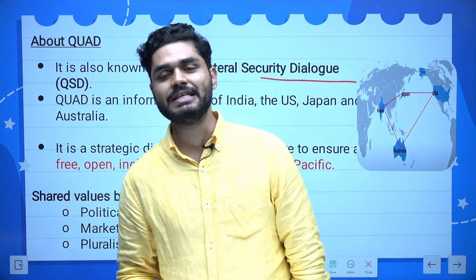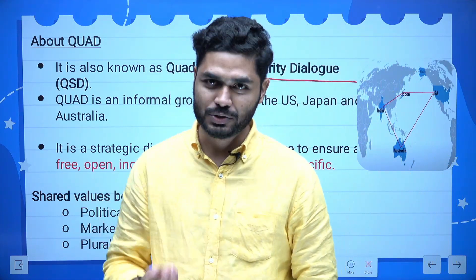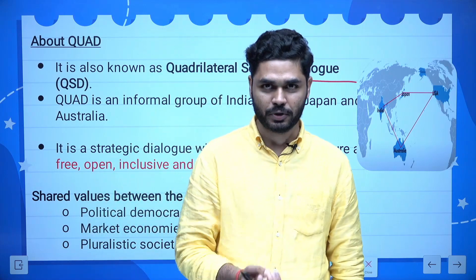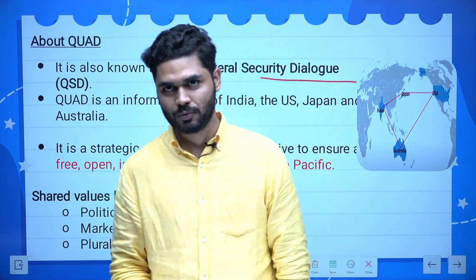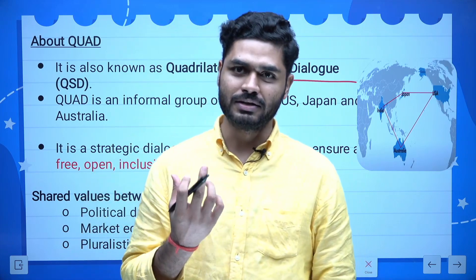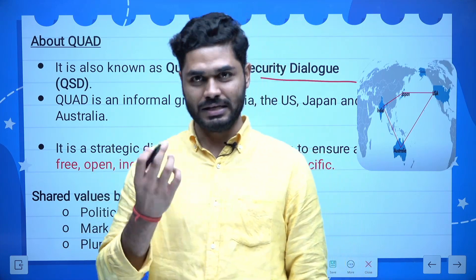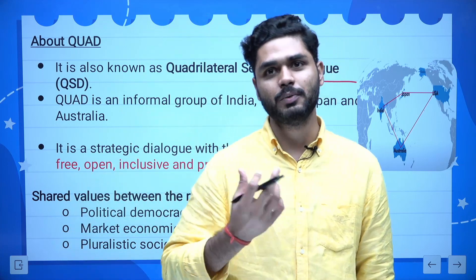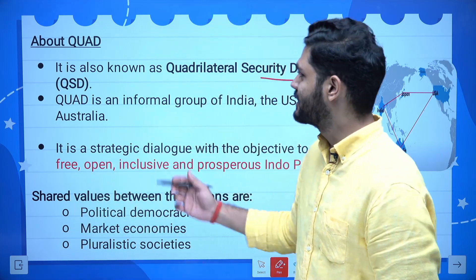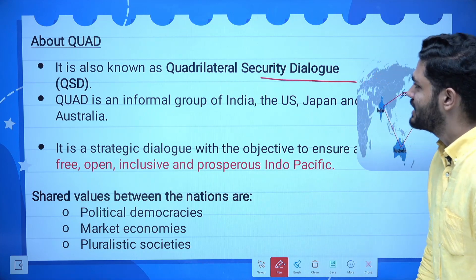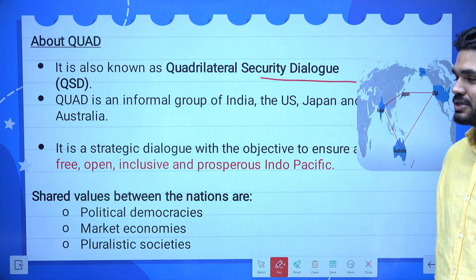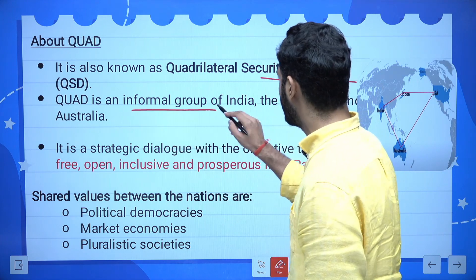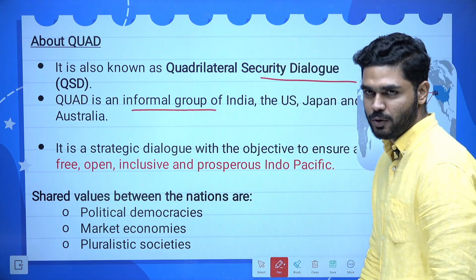Quad is made up of four countries. Today we are going to talk about what is Quad, why is Quad so important for India, what is the significance of Quad for geopolitical purposes, and are there any challenges for it and what could be the way forward. It's an informal group of India, US, Japan and Australia.